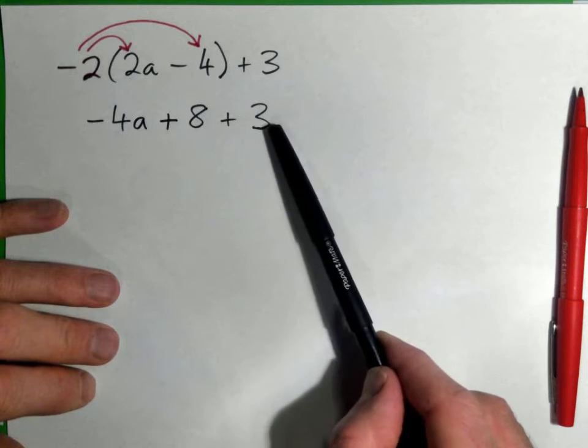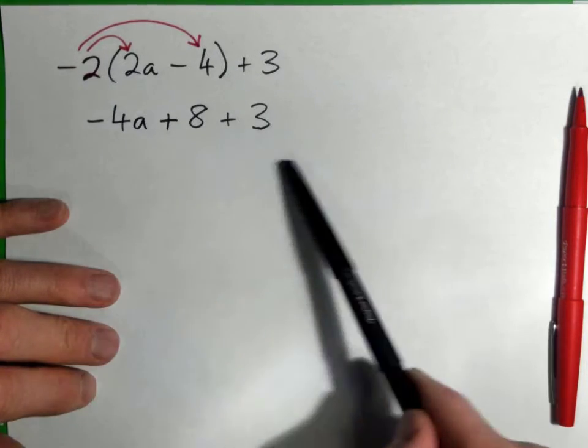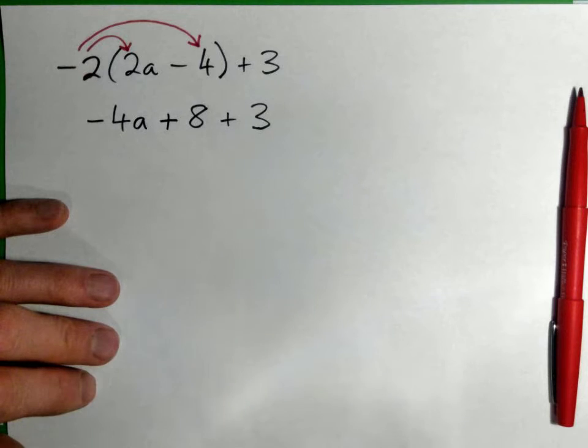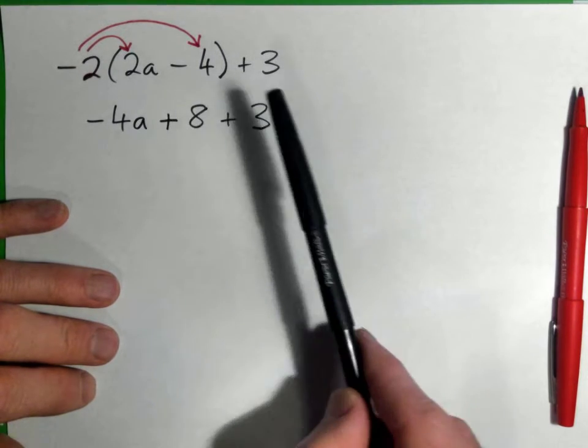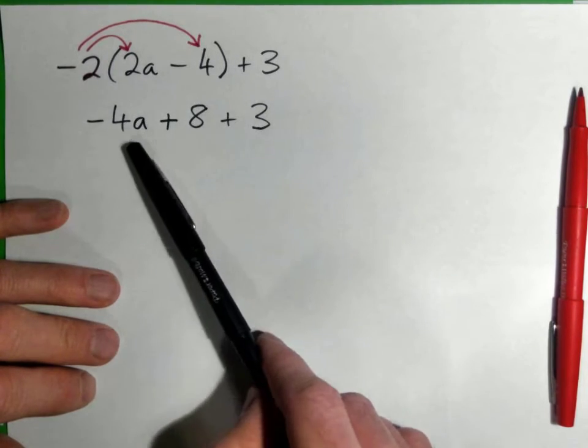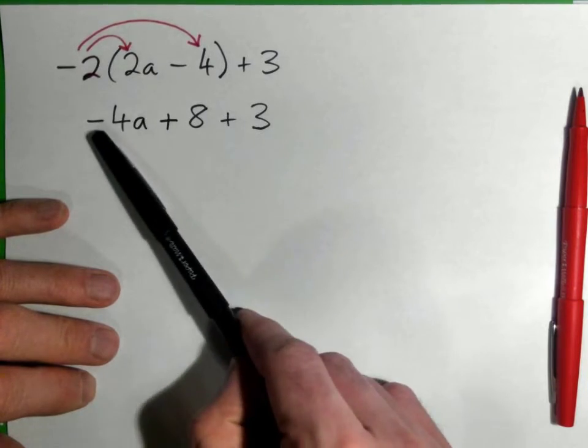What like terms can we put together? The 8 and the 3 go together. Good job. The a does not - that's a different animal, different species. This is apples, this is dollars.